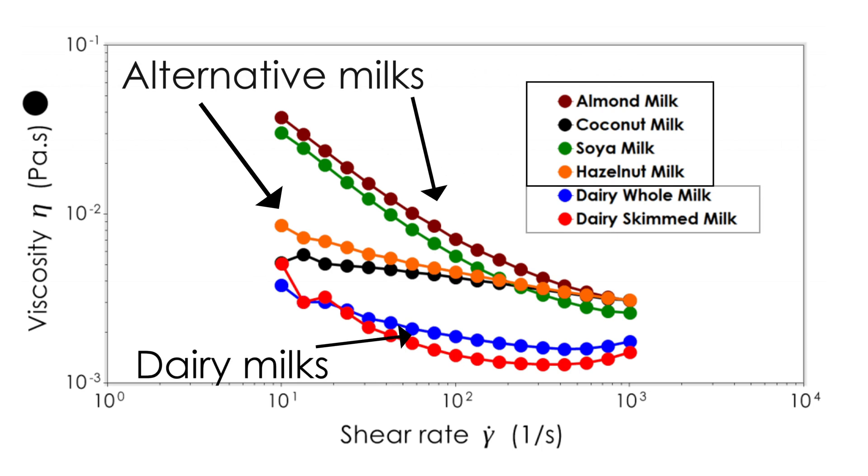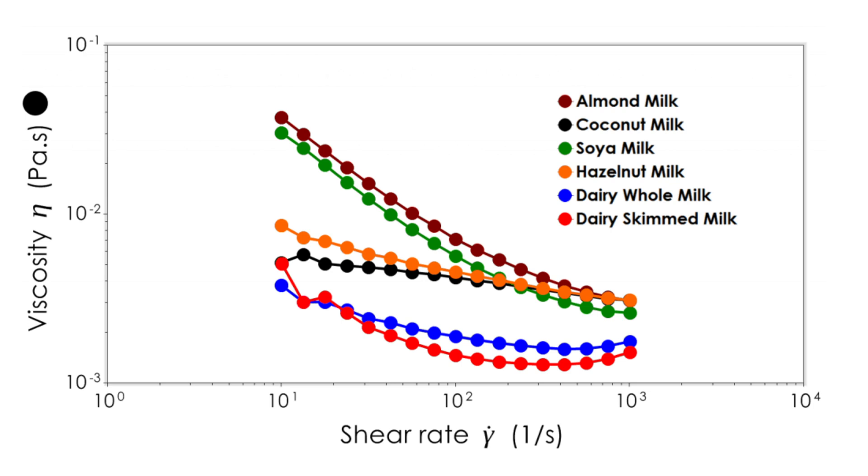In this experiment, plant-based milk drinks and dairy-based milk drinks were compared, changing the shear rate to get valuable insight into the plant- or dairy-based behaviors.